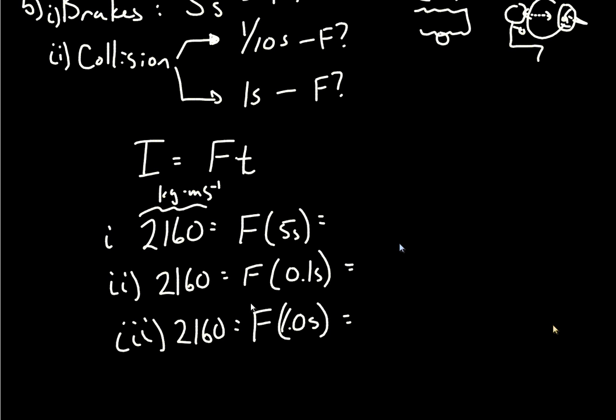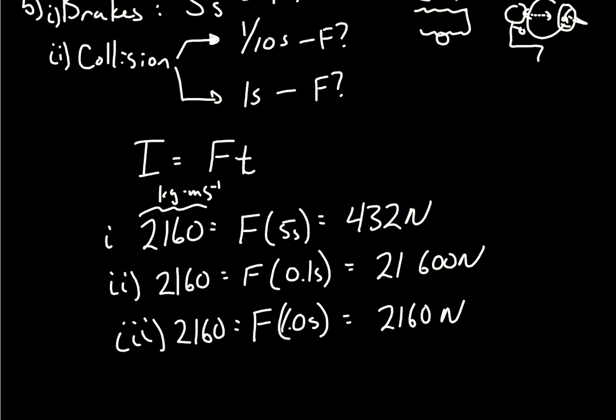Some quick math shows pretty high variability in the forces you receive within a pretty small time frame. The difference between a crash happening over 0.1 seconds versus 1 second varies the force on your body by 10 times. One second is not very long, and variation within that one second can really mean the difference between living and dying.